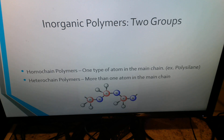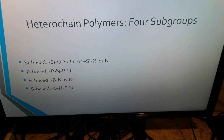Inorganic polymers can be broken into two groups: homochain polymers and heterochain polymers. Homochain polymers contain one type of atom in the main chain — for example, polysilane is a type of homochain polymer. Heterochain polymers have more than one atom in the main chain, and can be broken into four groups: Si-based, P-based, B-based, and S-based. Si stands for silicon, P stands for phosphorus, B stands for boron, and S stands for sulfur.